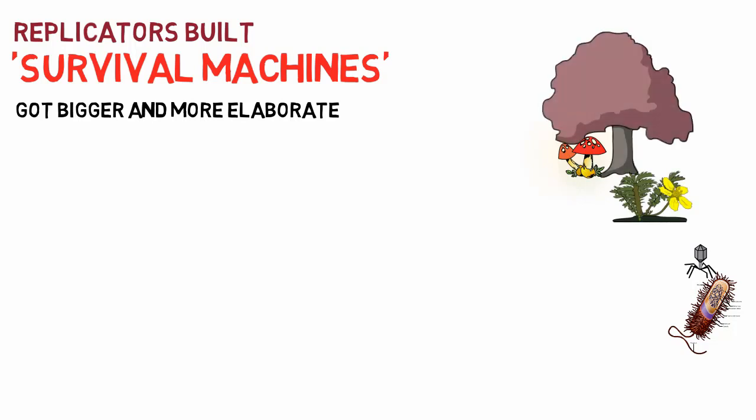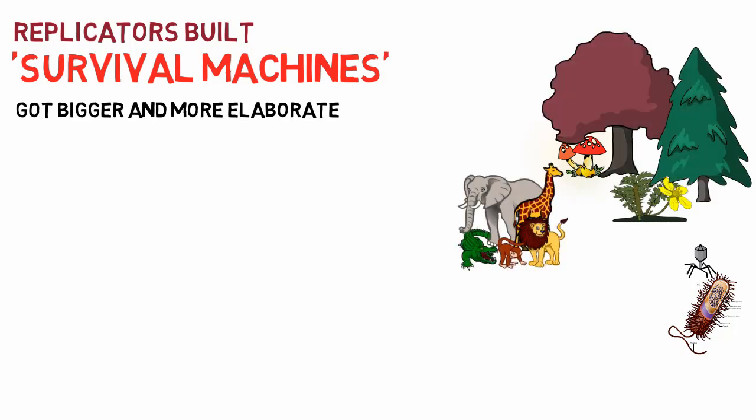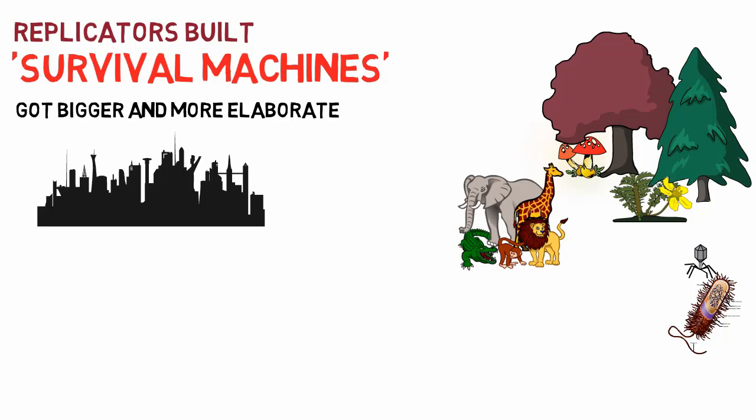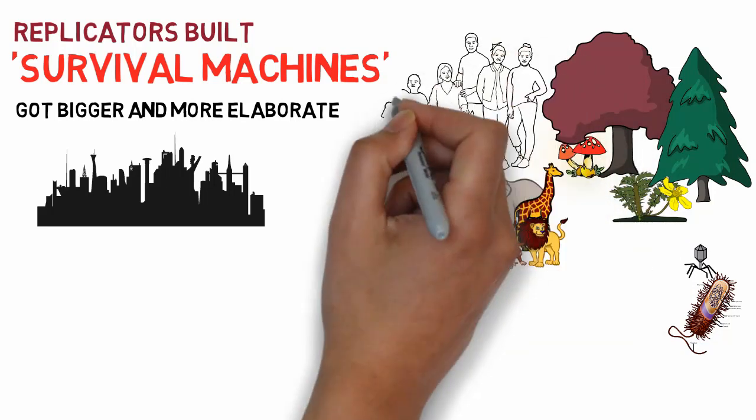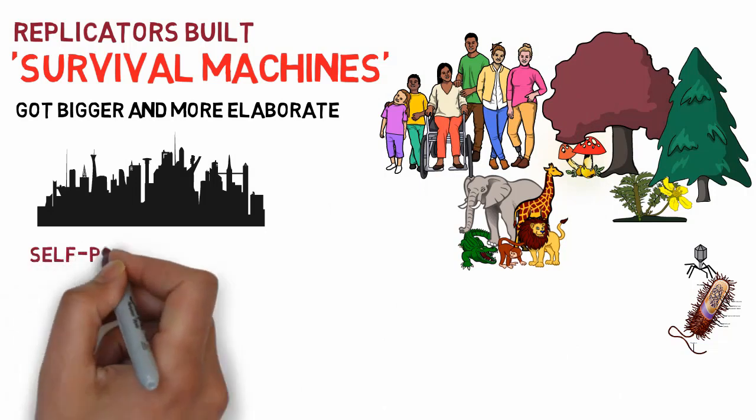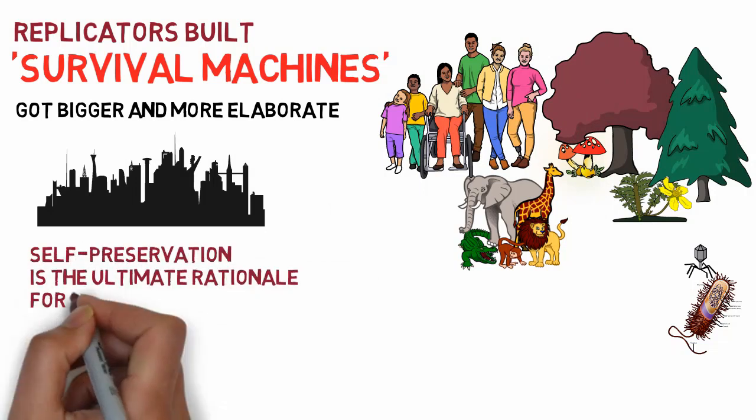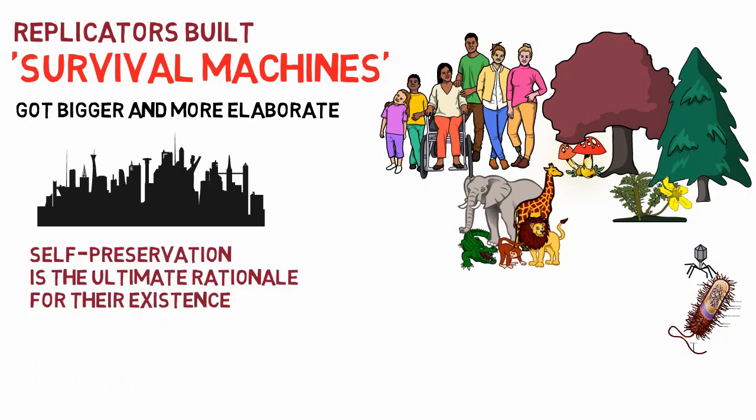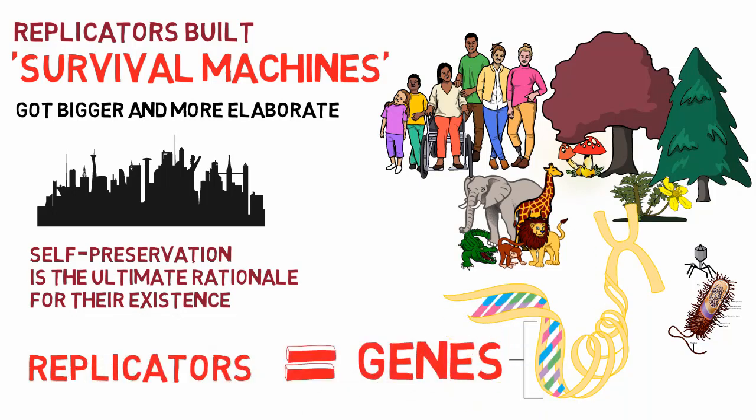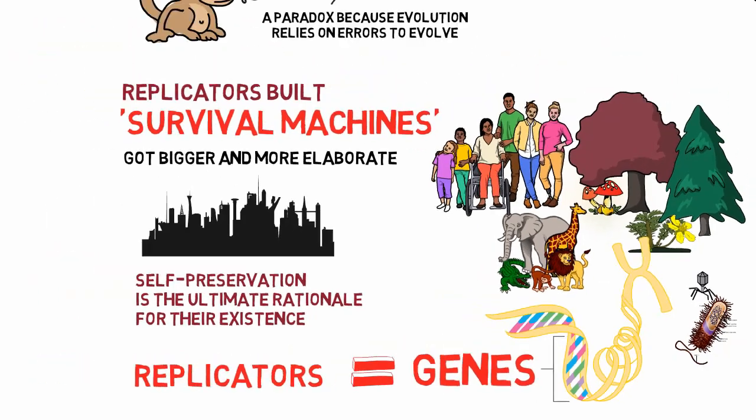After about 4,000 million years, replicators now live in huge colonies, safe inside large robotic machines, inside different species. The replicators created us, and self-preservation is the ultimate rationale for their existence. These replicators are called genes, and we—humans, animals, plants, bacteria, and viruses—are their survival machines.